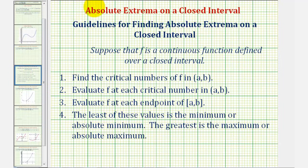To do this, we'll first find the critical numbers of the function on the open interval. Then step two, we'll evaluate the function at each critical number. Step three, we'll evaluate the function at the endpoints of the closed interval. And then step four, the least of these values is the minimum or absolute minimum, and the greatest is the maximum or absolute maximum.